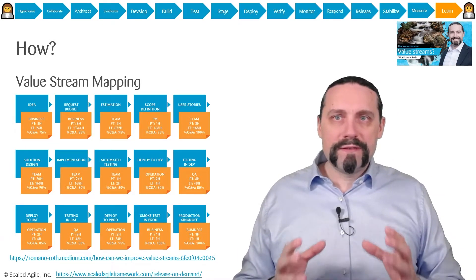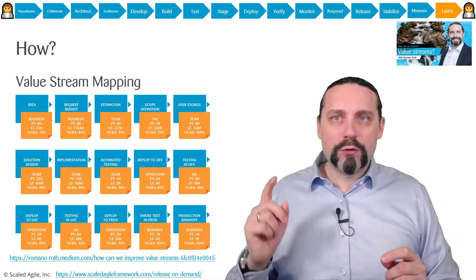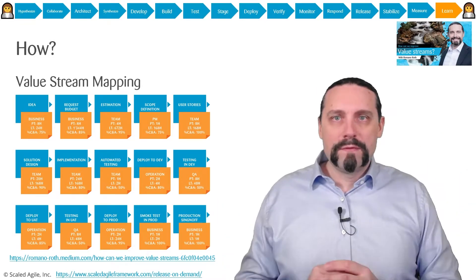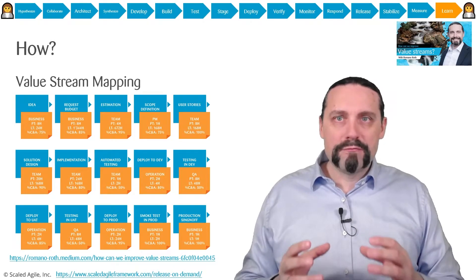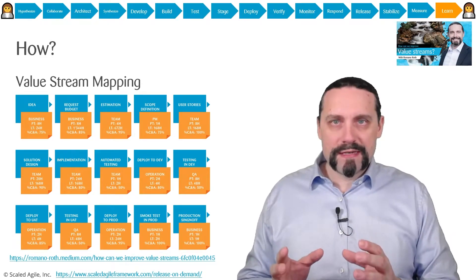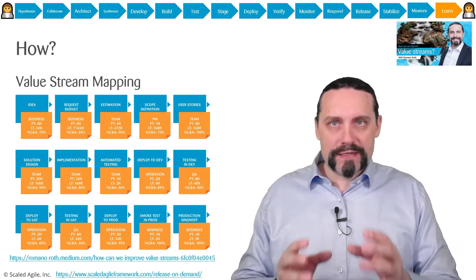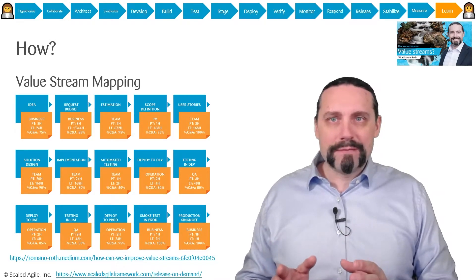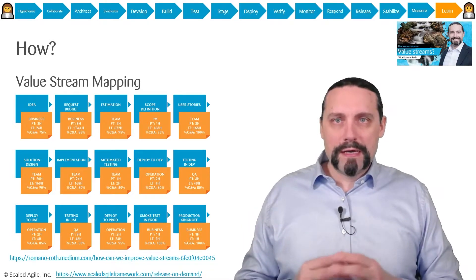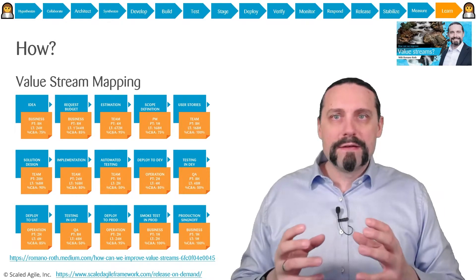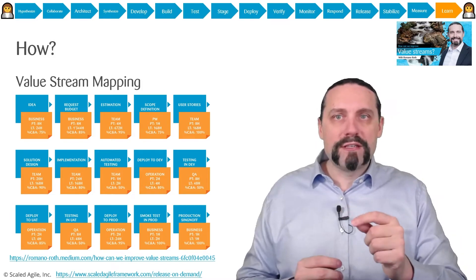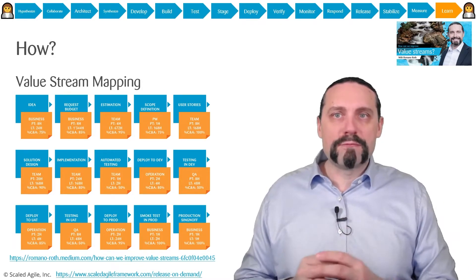In a value stream mapping workshop you identify all the steps needed to bring an idea from creation into production. You identify all the people needed in each process step. Then you identify the process time — the time where actual value-adding work is done. Then you identify the lead time — the time from one process step until the end of the next process step. Finally, you identify the percentage complete and accurate (C&A), which shows how many times you need to return to a process step because the quality of its output was not good enough.